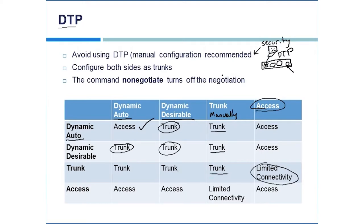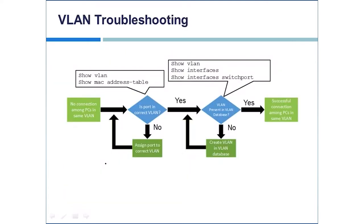To go a little further on security — we'll talk about this more later — every port that will never be a trunk should be manually made an access port to avoid the potential problem of someone trying to negotiate a trunk.